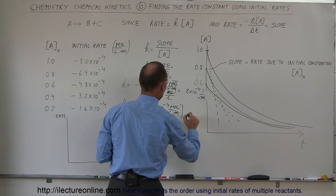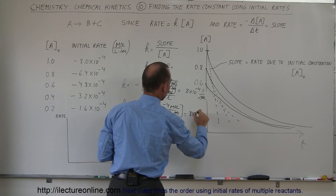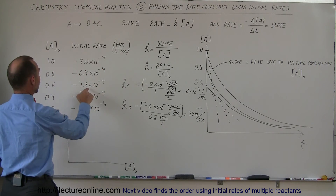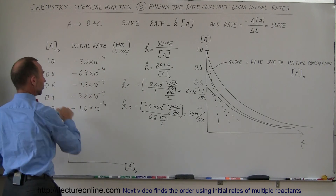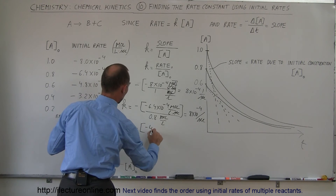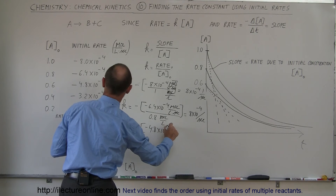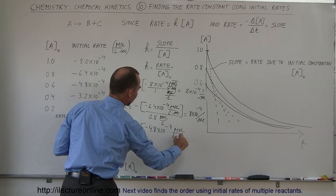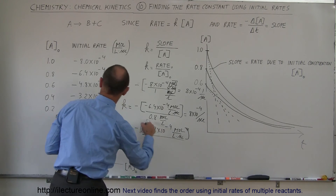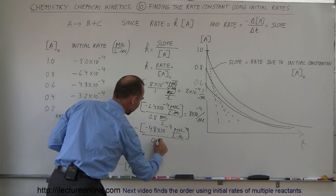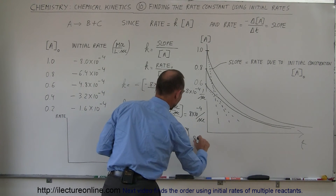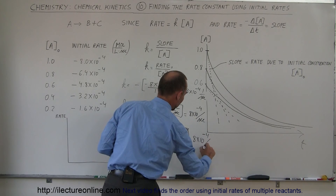Now we do it for the next point. We take this rate and this concentration and see that K equals the negative of minus 4.8×10⁻⁴ moles per liter per second, divided by the new concentration of 0.6 moles per liter. Again, we get the very same value for K, which is 8×10⁻⁴ per second.